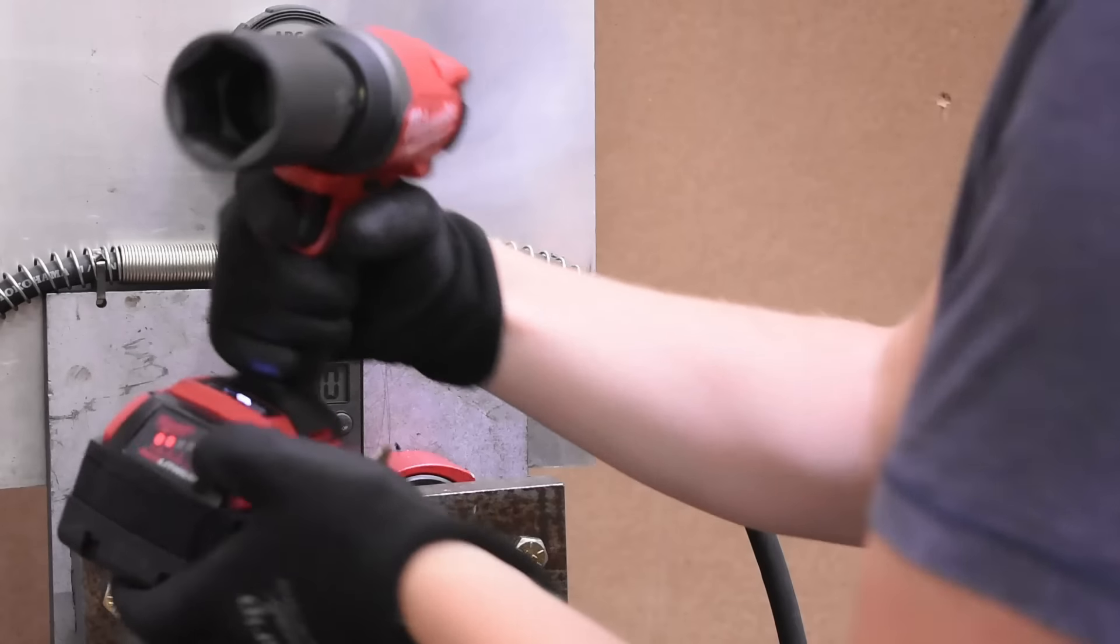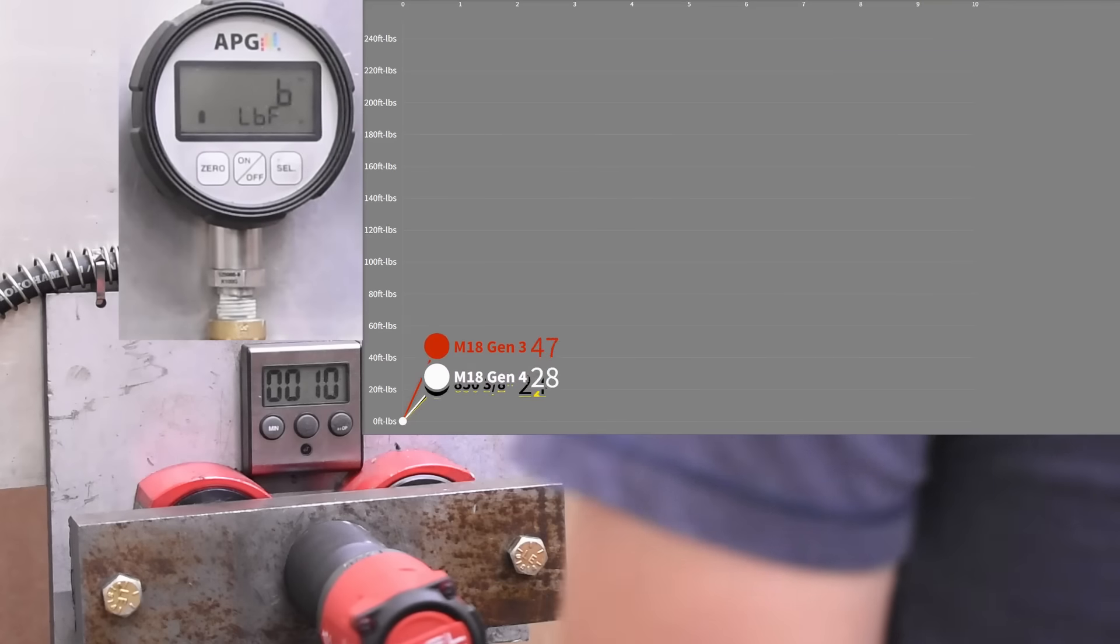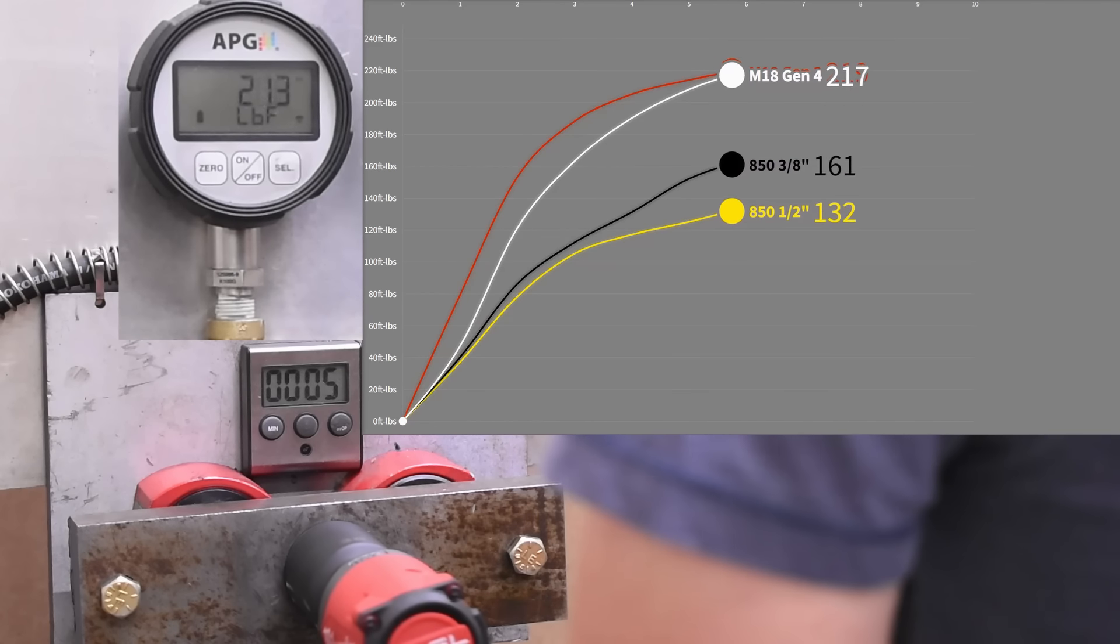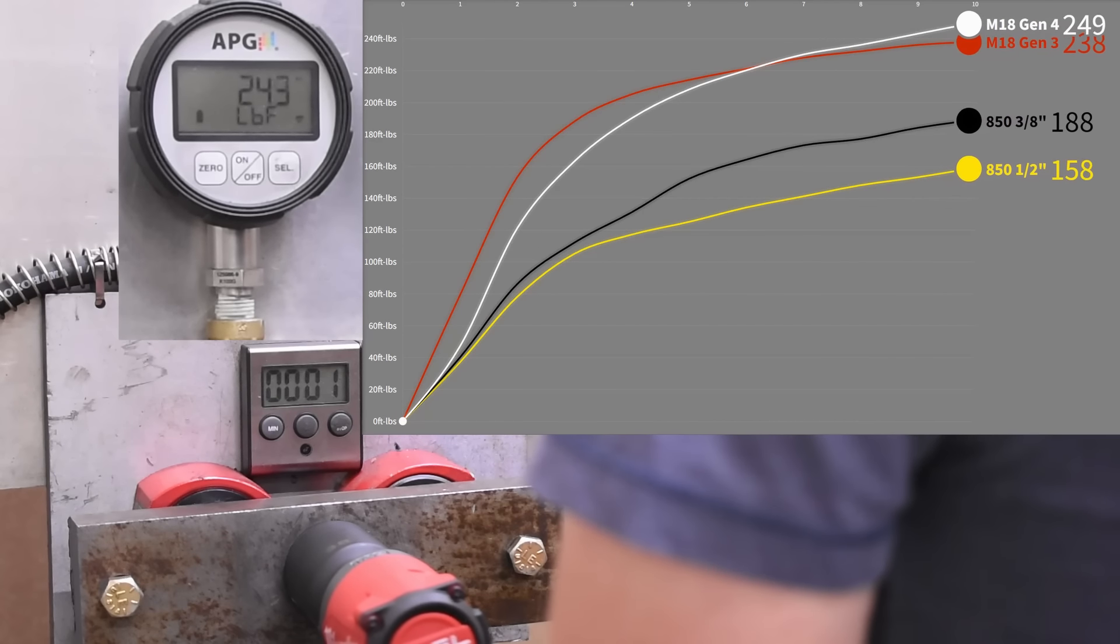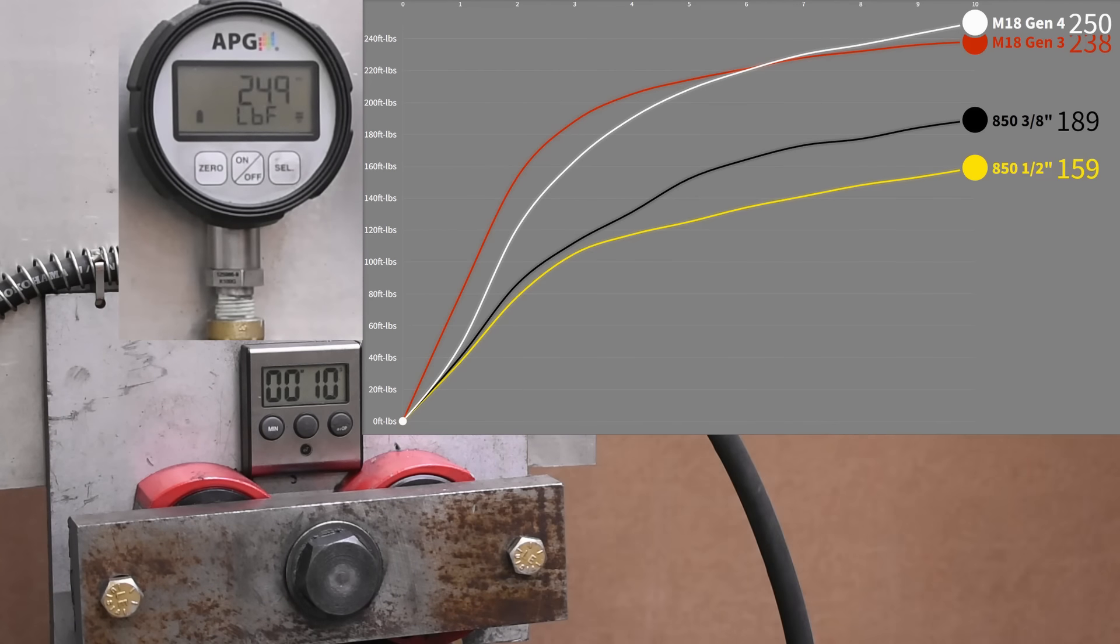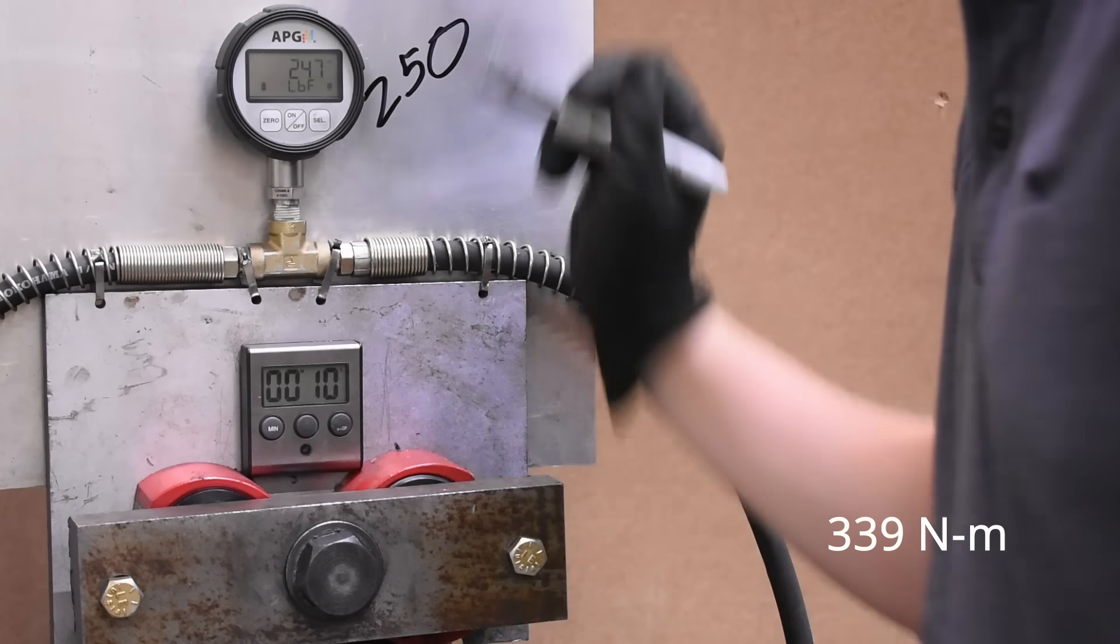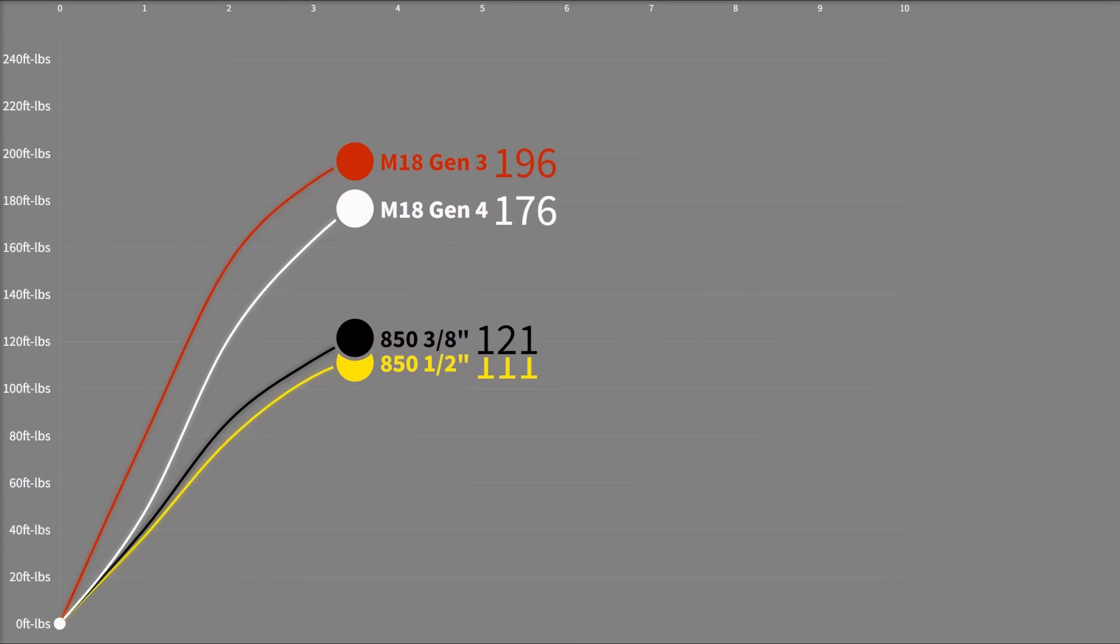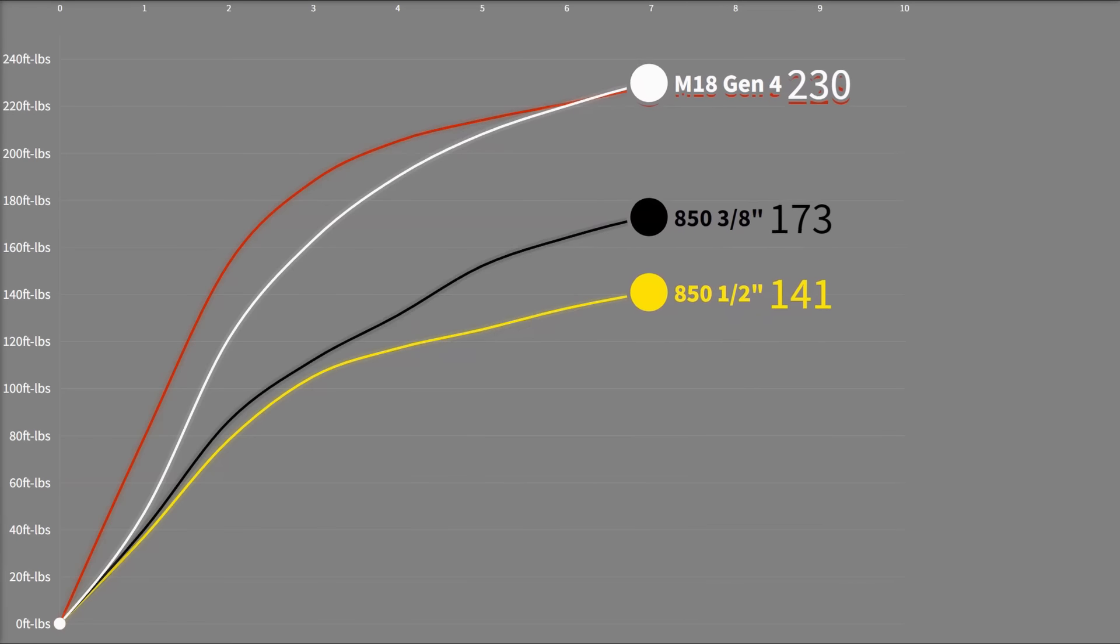Here's the latest impact driver on the market, the M18 Gen 4 converted to half-inch. 250 foot pounds, able to again come in later in the curve and make a splash. We figured with the higher impacts per minute it would make early gains then run out of steam, but at higher torque levels it's still delivering and also getting quite hot in the process.